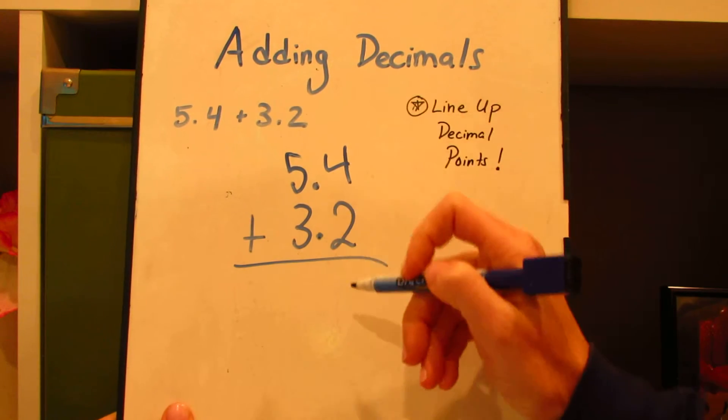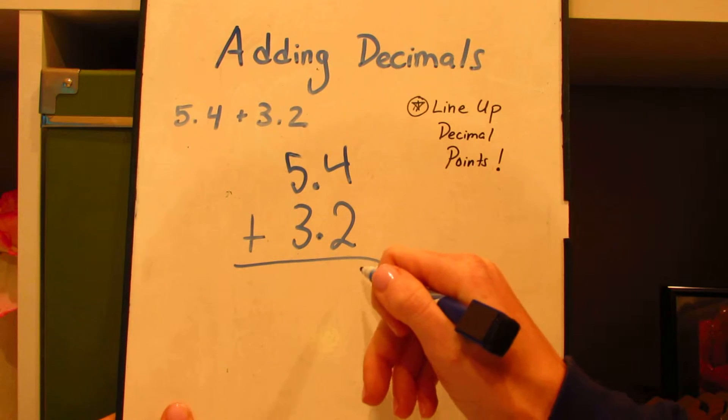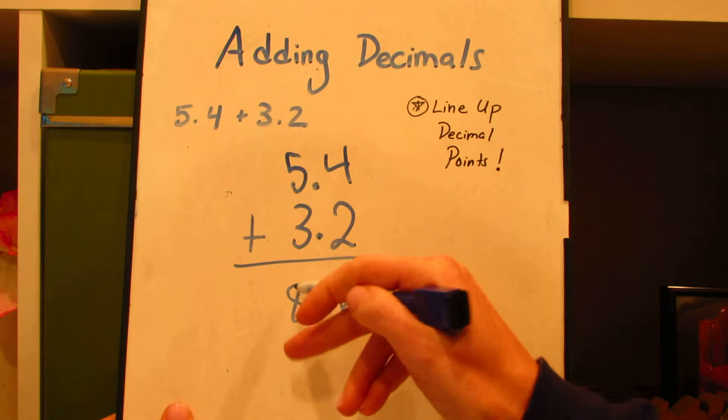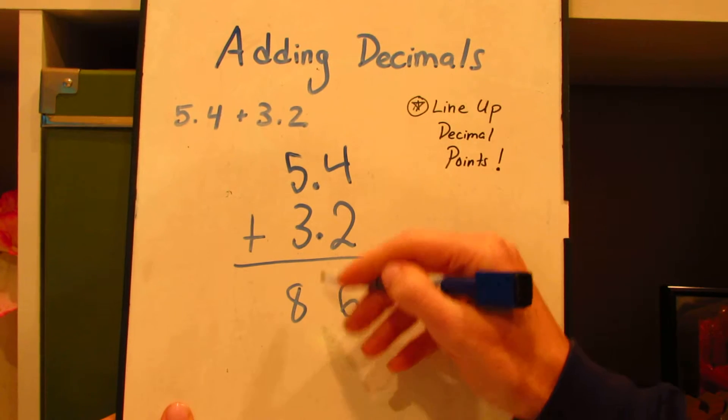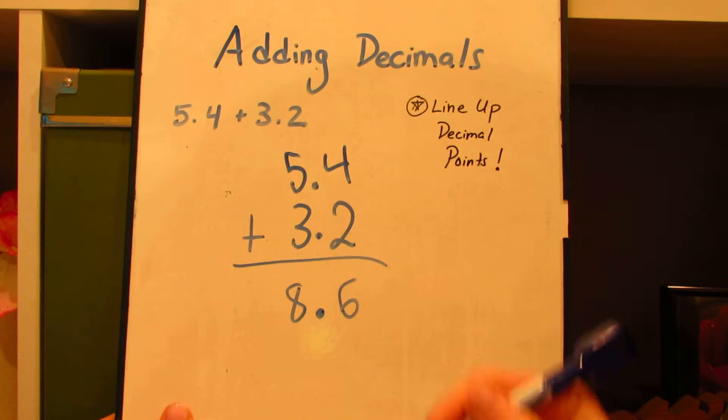Now when I add, I'm going to add vertically like I normally do. 4 plus 2, that's 6. 5 plus 3, that's 8. My decimal point is just going to join these other two right in a line.